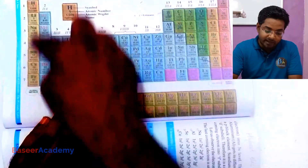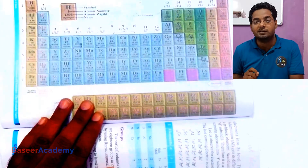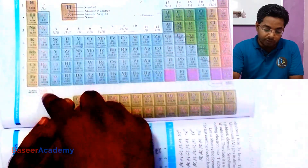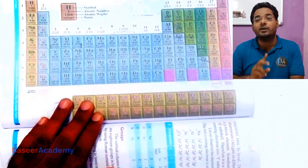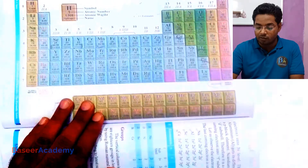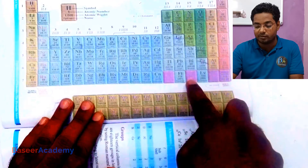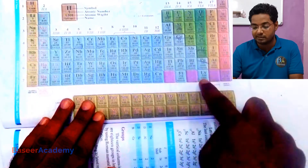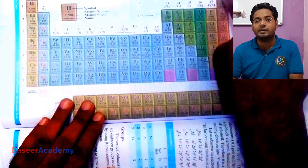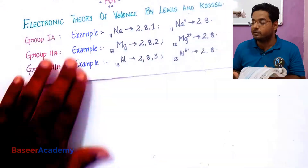Group 1A elements all have one valence electron, meaning one electron in the outermost orbit. Group 2A elements have two valence electrons. Group 3A elements have three valence electrons. Group 4A elements have four. Group 5A elements have five. Group 6A elements have six. Group 7A elements have seven valence electrons, and group 8A elements have eight valence electrons.